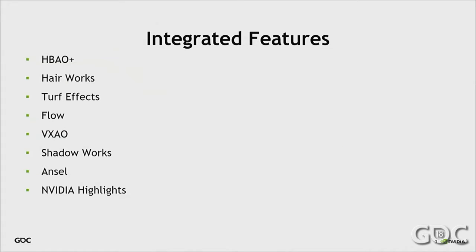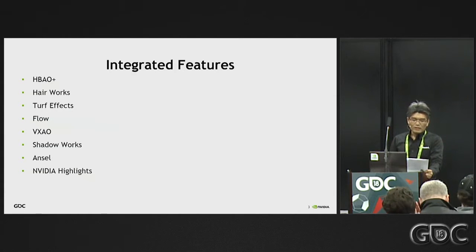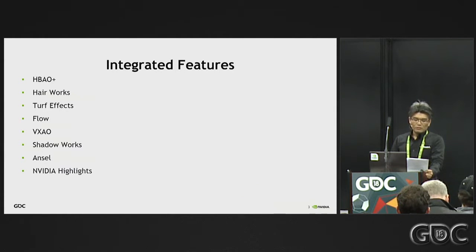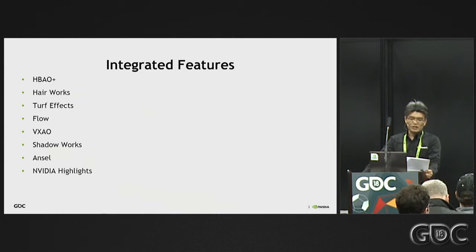Here is a list of integrated features into Luminous Engine and the game. Quite a few modules have been integrated. We started with GameWorks features first, and later integrated Ansel and NVIDIA Highlights. For Final Fantasy XV, HBao Plus wasn't used in this title, though it has been integrated in the engine. And Flow was used for campfire only.